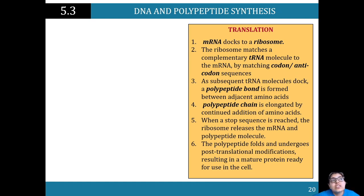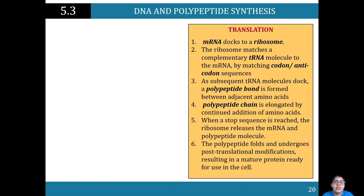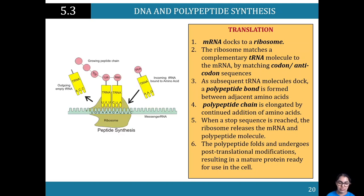mRNA is the messenger — it has written down the recipe and now it takes that recipe to the ribosomes, to the kitchen. Once you write down the recipe you found, you go ahead and cook it. But to properly cook you need the kitchen where all the equipment is — and in this case that is the ribosome. It is in those ribosomes where translation happens. The messenger RNA comes to the ribosome with the sequence for the proteins needed to be made.